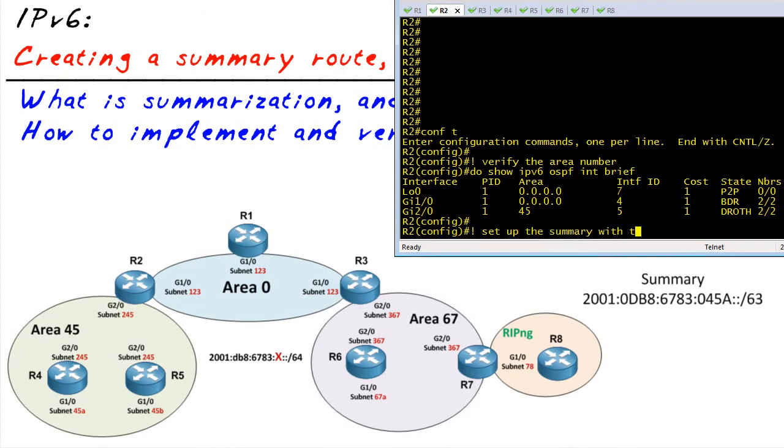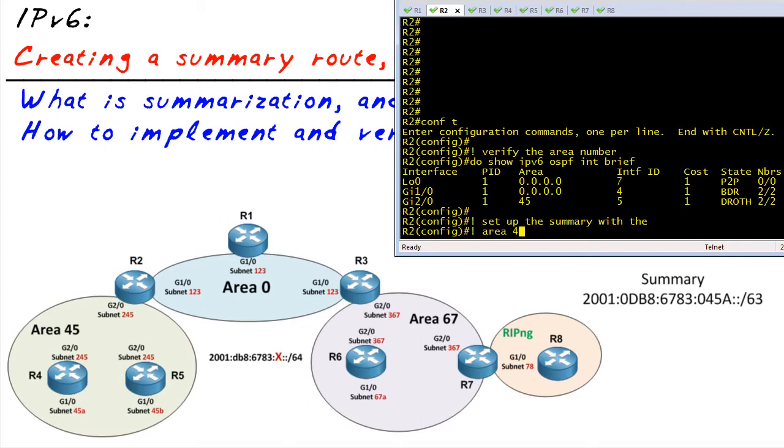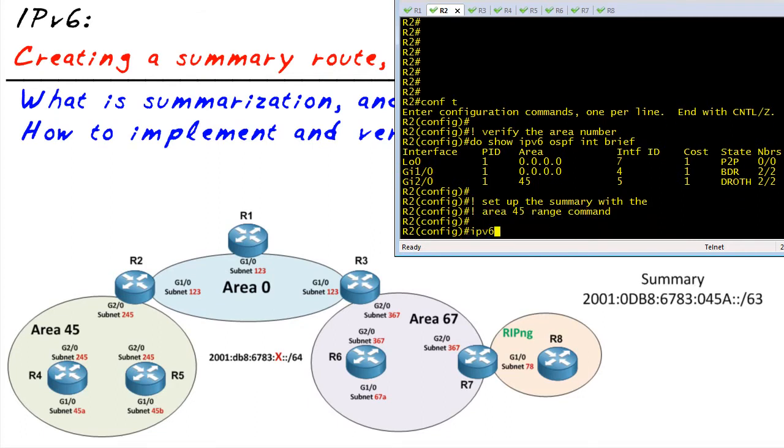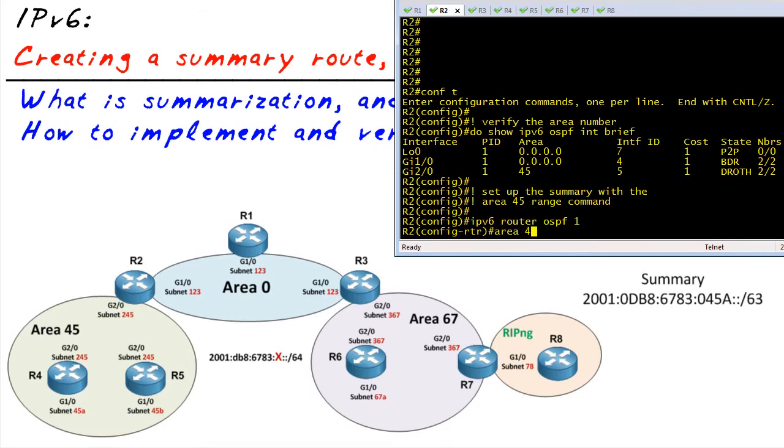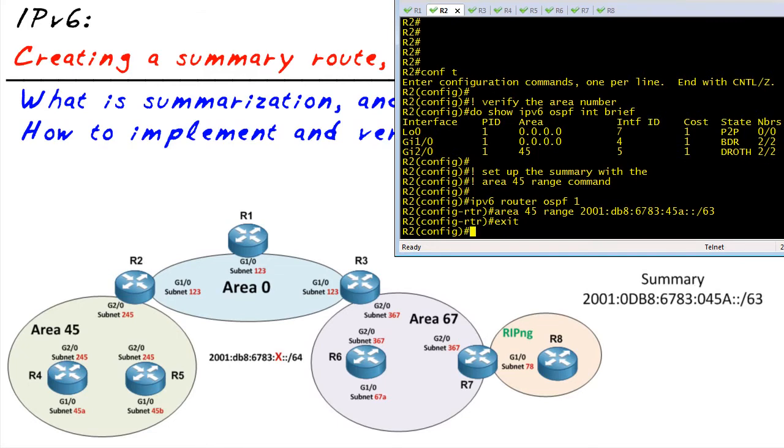Let's go ahead and set up the summary. To do so, we're going to go into IPv6 configuration mode for OSPF and then specify area 45, which is the area for which we want to do the summarization. We're going to specify the summary of 2001:db8:6783:45a::/63, and we're done.